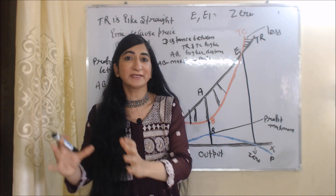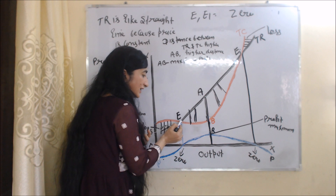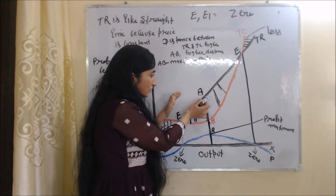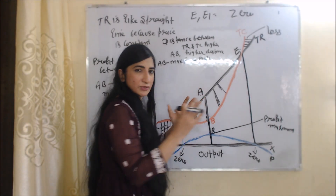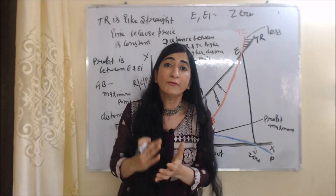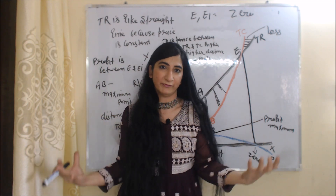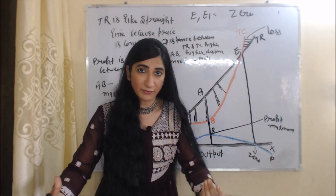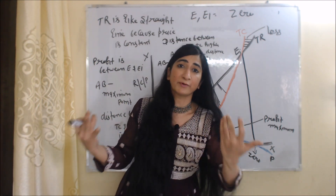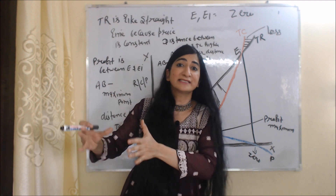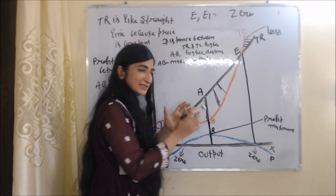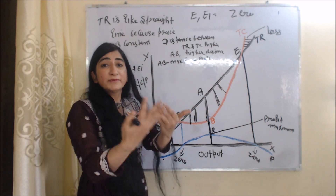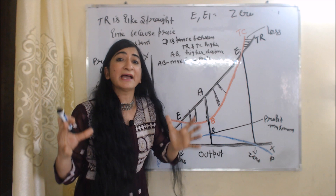The firm gets profit between points E and E1, because in that region total revenue is more than total cost — the total revenue curve is above the total cost curve. But in this approach, we talk about where the firm gets maximum profit. The firm gets maximum profit where the distance between TR and TC is highest. You can see the AB distance between TR and TC is the highest. Before AB, the distance is reducing, and after AB the distance is also reducing, so AB represents the maximum gap between TR and TC.